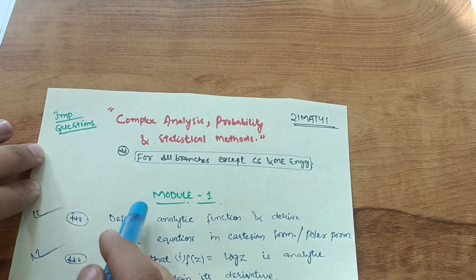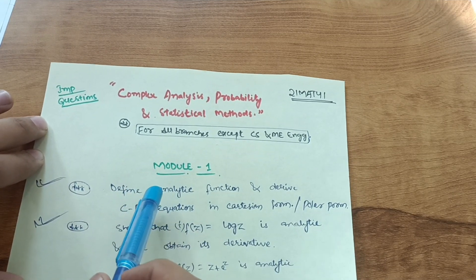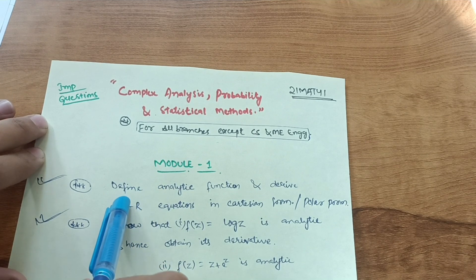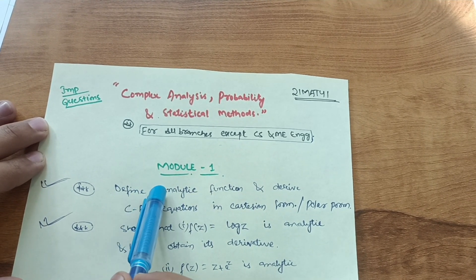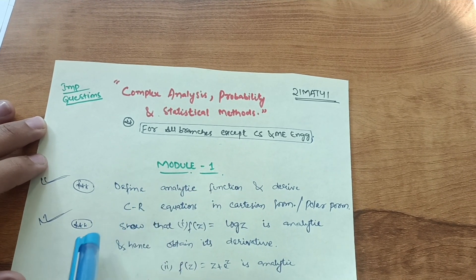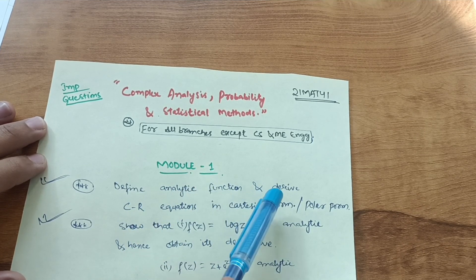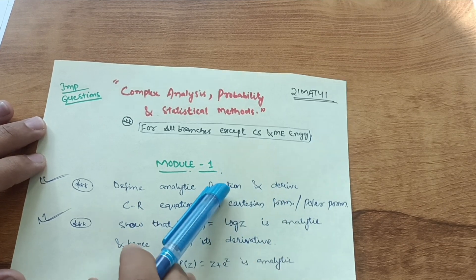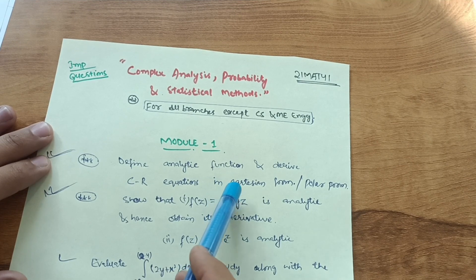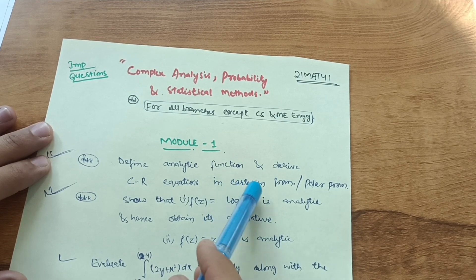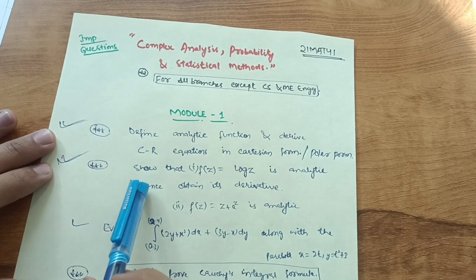Let me start with Module 1. The most important question is: define an analytic function and derive the Cauchy-Riemann equations in Cartesian form or polar form. Among these two, definitely one will appear in the examination — either Cartesian form or polar form.